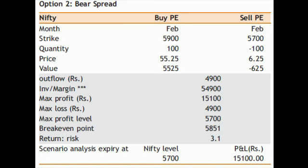Now let's move on to the bearish side. If you are bearish on the markets or on the budget, here are the strategies you can consider in this current scenario. The first is bear spread — we are doing a 5900-5700 bear spread. Again, you can punch in those data points into the Options Enabler tool and see the results.